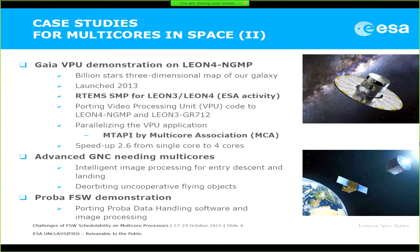I also saw a study on GNC, about grabbing space debris using a telescopic arm with a camera at the end, where the camera was part of the closed loop. Again, that needed a lot of CPU power. Basically, this justifies why we think we can and would like to use multi-cores in the future, because as you know, in all the gadgets you have here — your phones and computers — you already have multi-cores. It's a technology being used more and more.